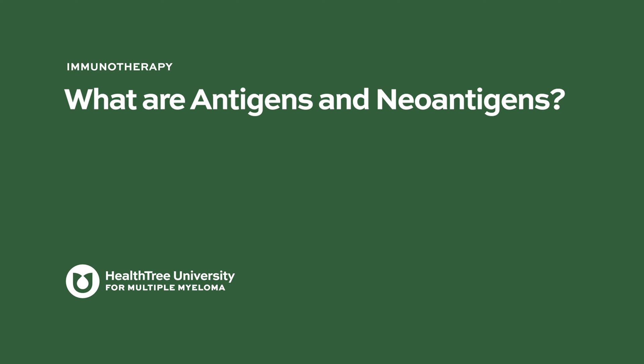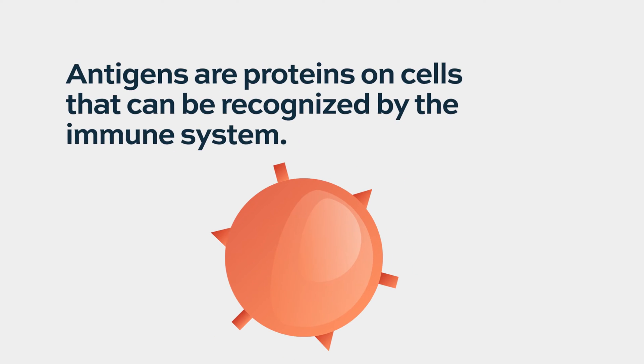What are antigens and neoantigens? In cancers in general, what we've come to understand is there are two types of proteins that can be recognized by the immune system. These proteins that can be recognized by the immune cells are called antigens.